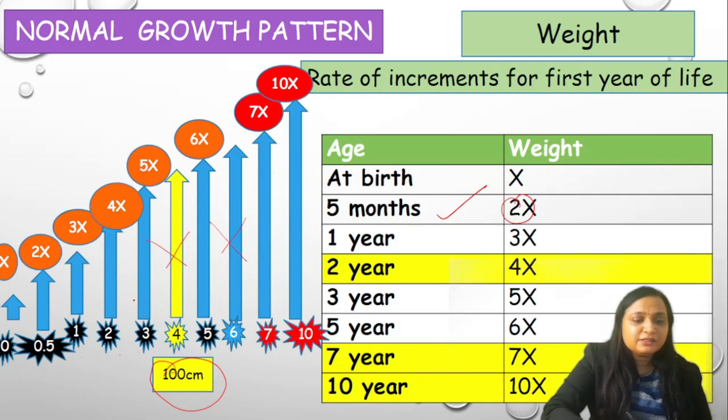We have already discussed it. At 2 years it is 4x, at 3 years it is 5x, 4 years to be skipped, 5 years it is 6x, 6 years to be skipped, 7 years 7x, 10 years 10x.